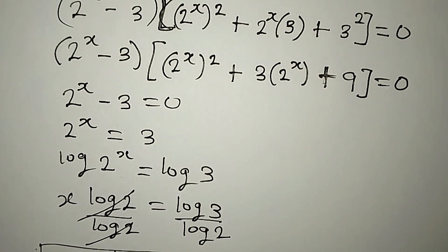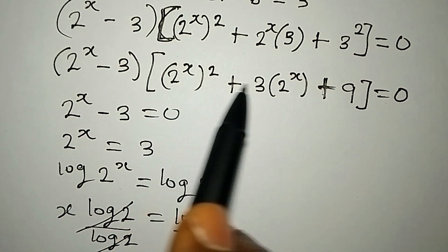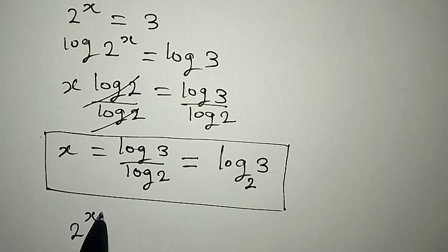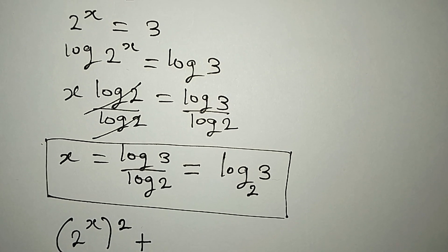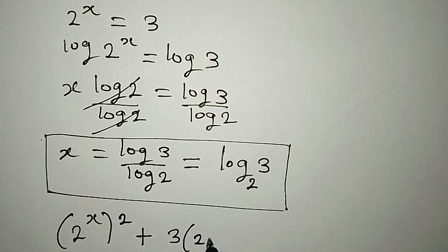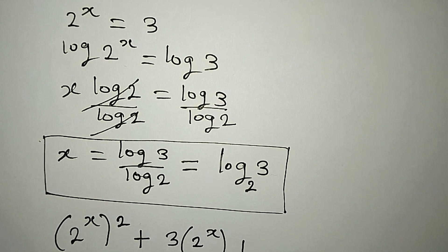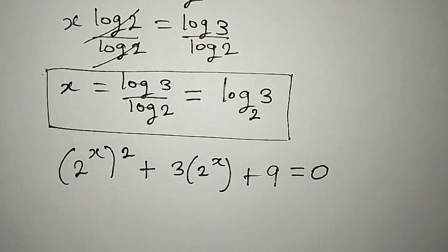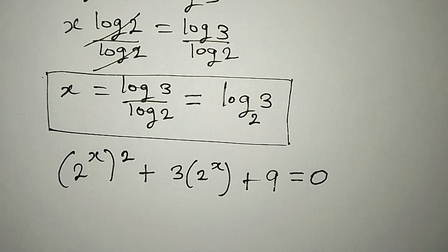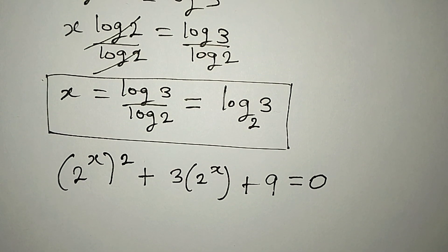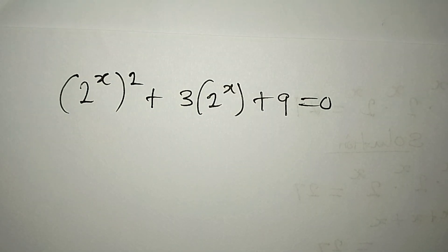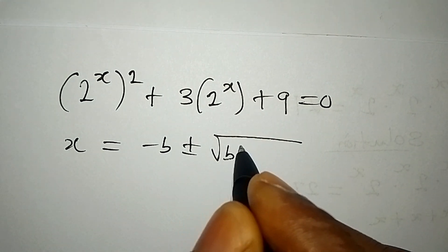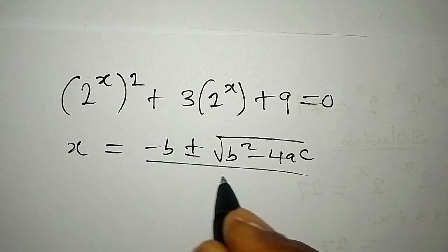Then to get the other values of x, I need to go over to the second factor and copy it out. We have 2 to the power of x, to the power of 2, plus 3 times 2 to the power of x, plus 9, equals 0. From here we are going to apply the quadratic formula to deal with this. The formula is x equals minus b plus or minus square root of b squared minus 4ac, all over 2a.